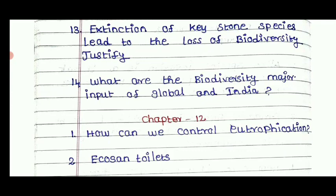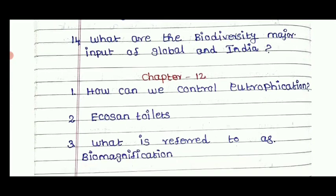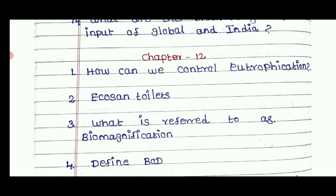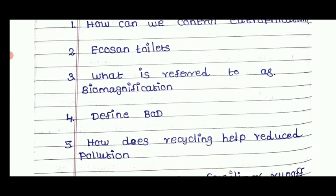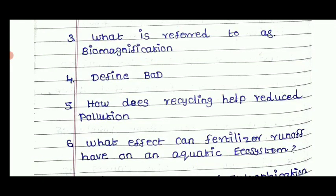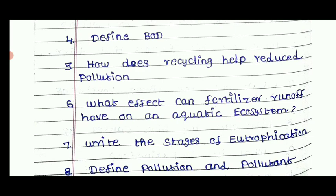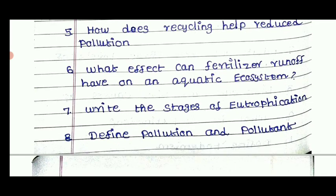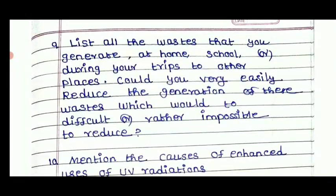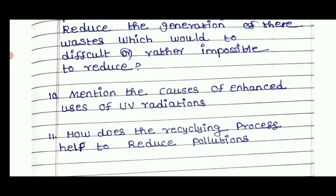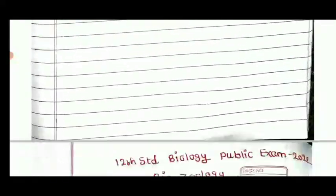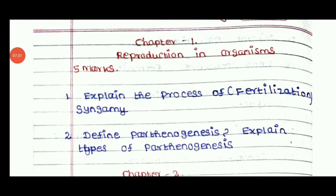For Chapter 12, Environmental Issues, important questions include: how to control eutrophication; what is biomagnification; define BOD (Biochemical Oxygen Demand); how does recycling help in reducing pollution; what are the effects of fertilizer runoff on aquatic ecosystems; write the stages of eutrophication; define pollution and pollutants; and what are the costs of inconsiderate use of UV radiation.